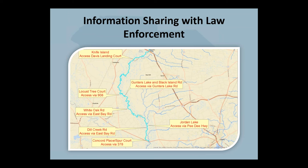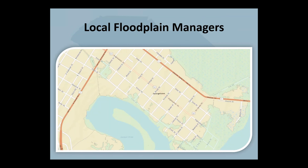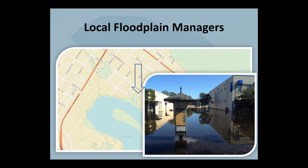We noticed the map was too complicated for law enforcement to use in the field on just an iPhone, so we created a best-use PDF that told them where to go based on the information and gave them their access points, so they could reach people faster. This was much easier to read in the field. We also provided the information to our local floodplain managers. Here is an example from the city of Georgetown — you will notice how the impacted area was inundated, and our floodplain manager went out to take a picture confirming our map was quite accurate.